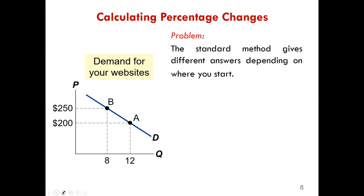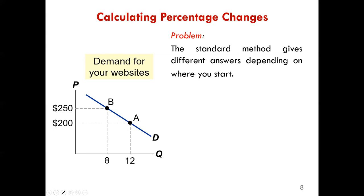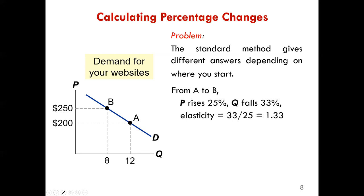This graph illustrates the demand curve for your websites. There is a problem with the standard approach: we get different answers depending on where we start. For example, going from A to B, price rises by 25 percent, quantity falls by 33 percent, and the price elasticity is 1.3.